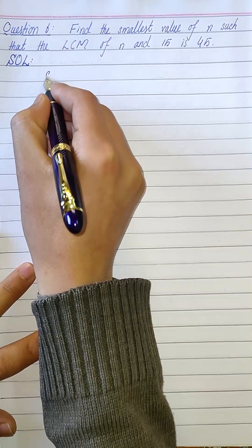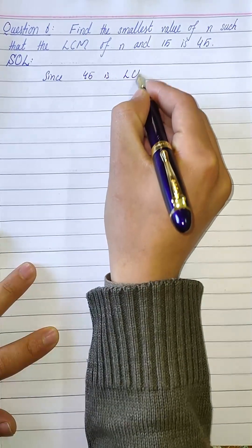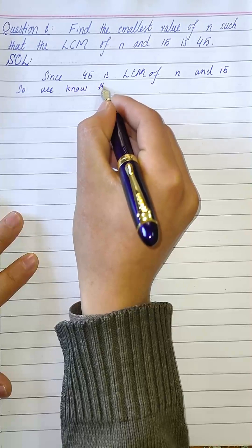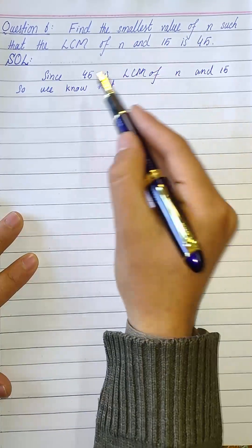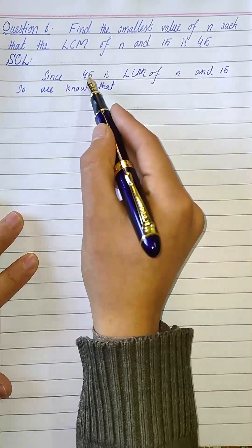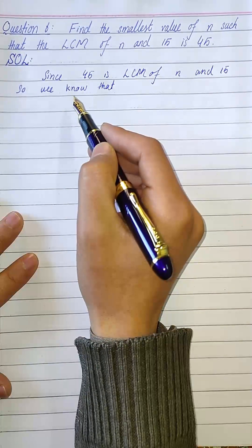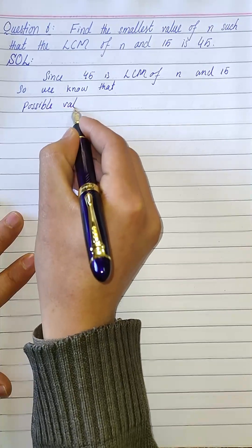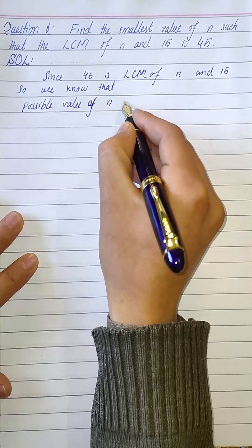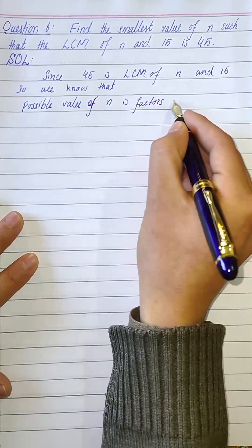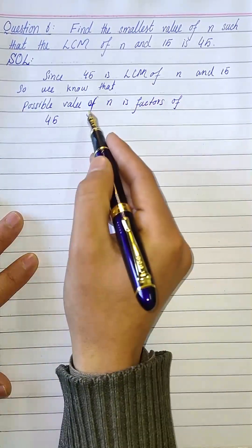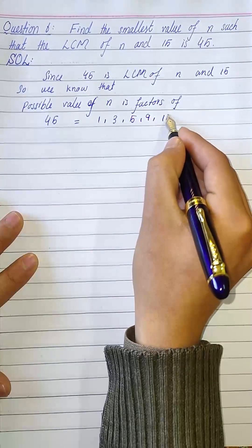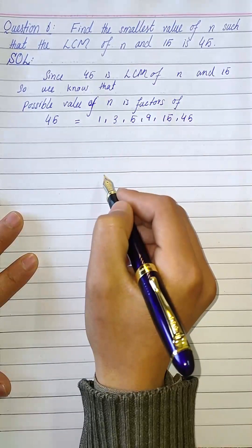Since 45 is the LCM of n and 15, we know that 45 can be divided by n and 45 can also be divided by 15. So n is a factor of 45 and 15 is also a factor of 45. Therefore the possible values of n are the factors of 45, which are: 1, 3, 5, 9, 15, and 45.